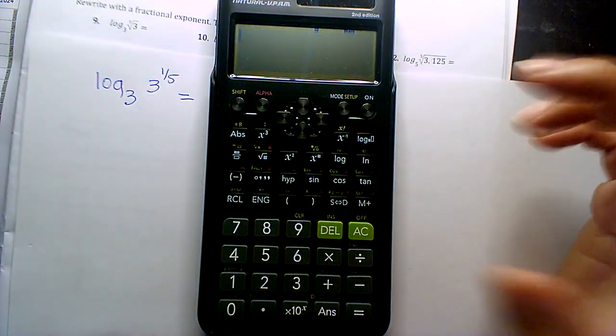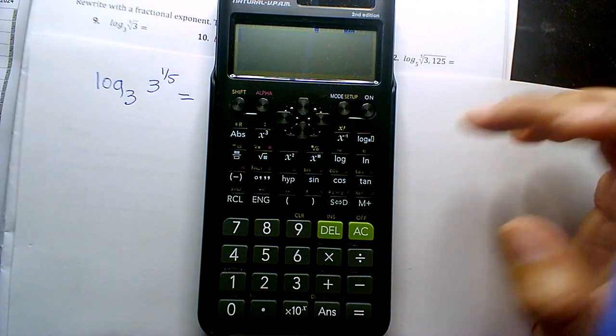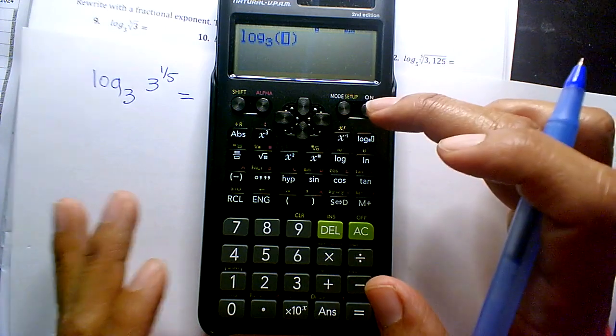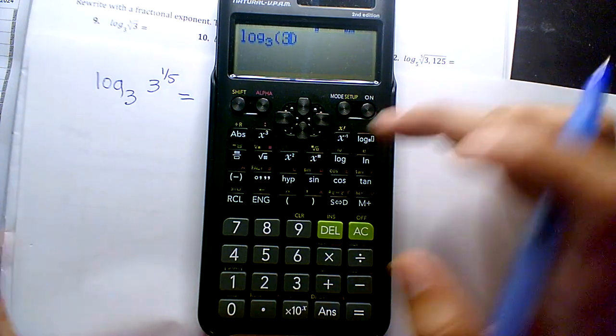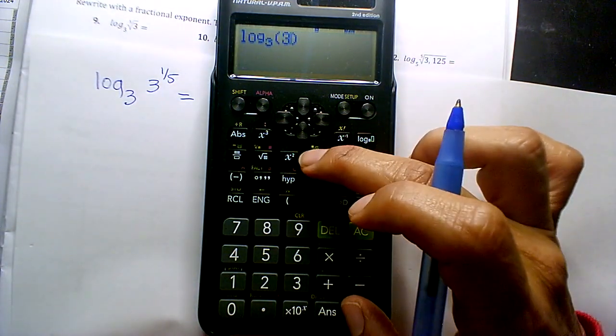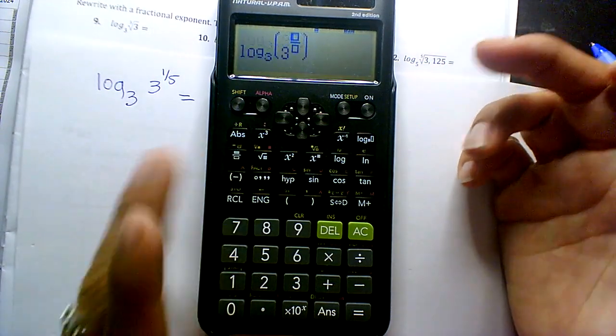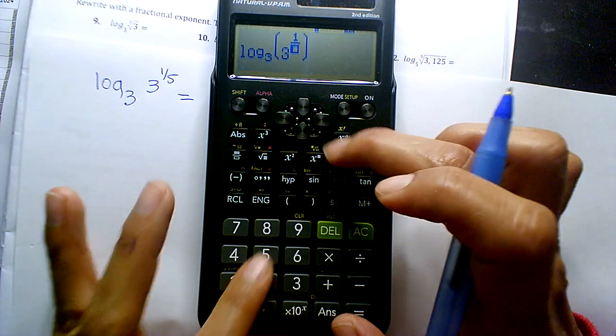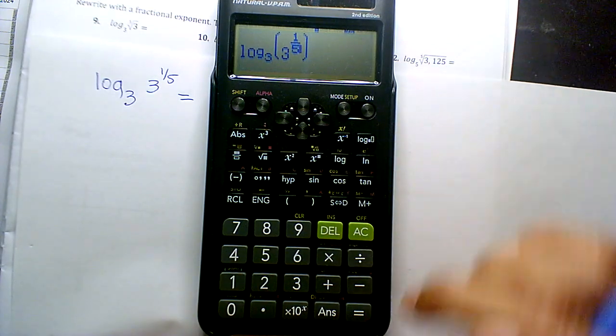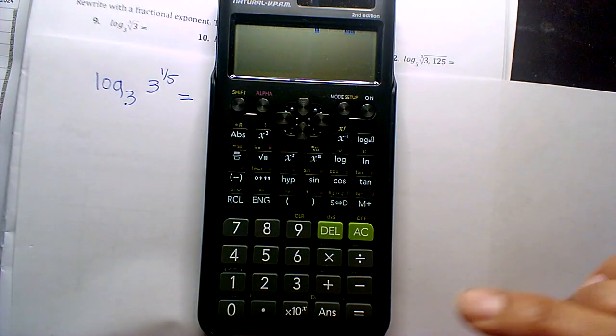All right, so let's do it again. Log base 3, write 3, hit the exponent. Why would I not hit that exponent? That is weird. One-fifth. Okay, hit equal, and I get one-fifth.